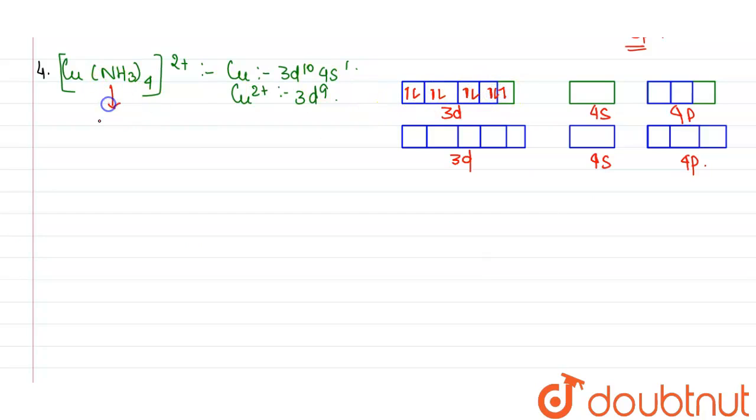But this NH3 this time is a strong ligand. And if it is a strong ligand, then it can initiate pairing. But pairing will not happen here. Rather movement of electron will occur to the outer orbital. So what happens is this electron present here will be moving to this orbital present here.